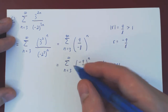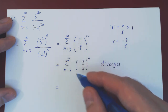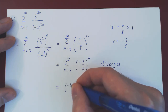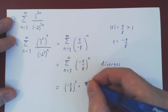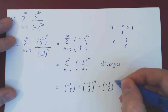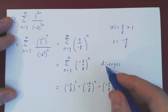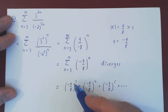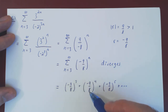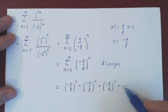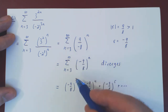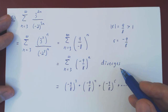The absolute value of r is 9 over 8, which is strictly larger than 1. So this geometric series diverges — it does not exist. To make this concrete, you can expand: negative 9 over 8 cubed, plus negative 9 over 8 to the 4, plus negative 9 over 8 to the 5, and so forth. As you keep adding consecutive powers of negative 9 over 8, you will never get closer and closer to a fixed real number. So you get nothing out of this series — it diverges.